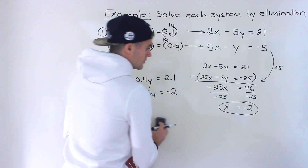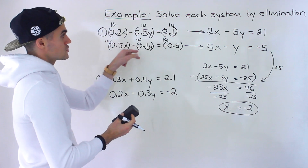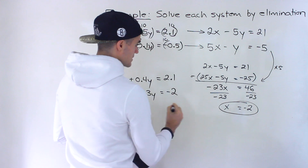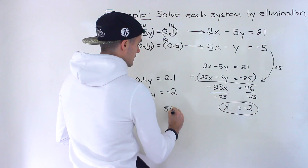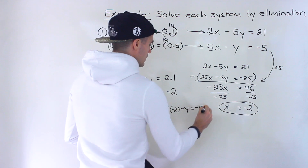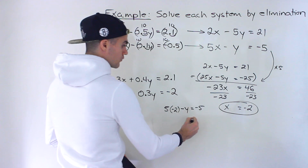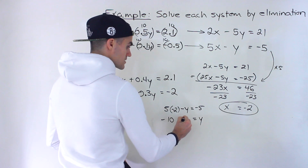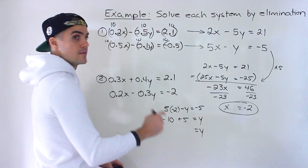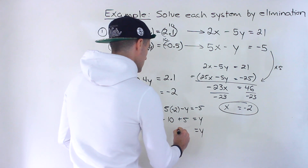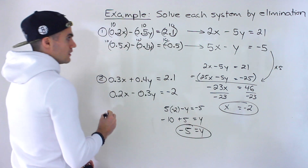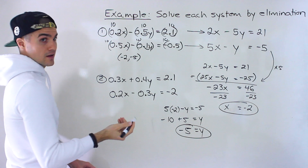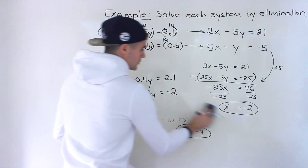We have the x value. We can plug it into either the originals or the integer expressions. I'll plug it into the second integer equation since y is more isolated. So 5 times negative 2 minus y equals negative 5. Bringing the negative y over: negative 10 plus 5 gives us y equals negative 5. So the solution is x equals negative 2, y equals negative 5 — that's the point of intersection between these lines.